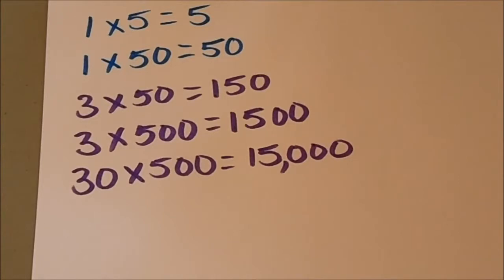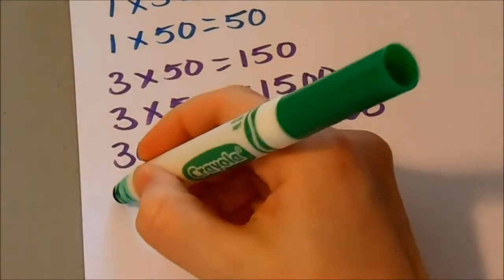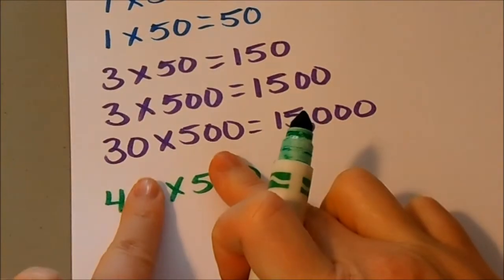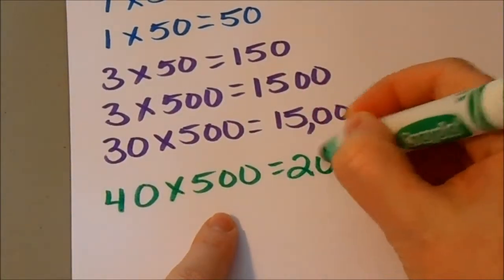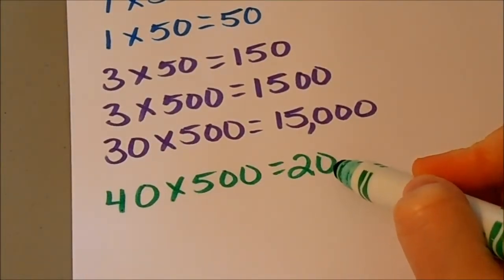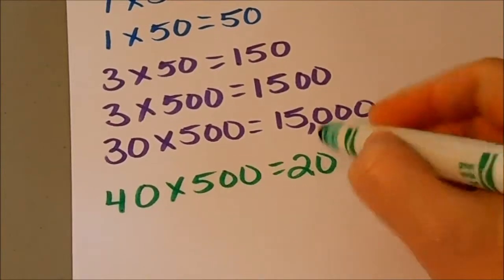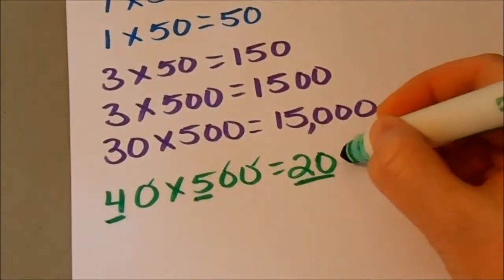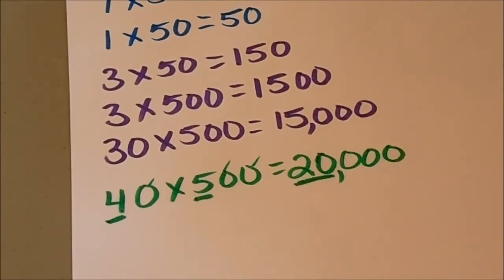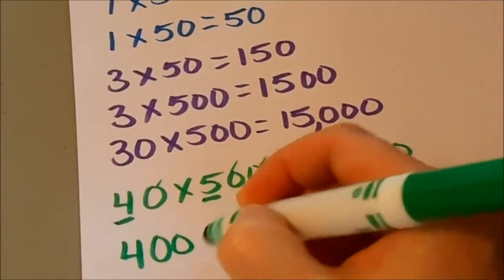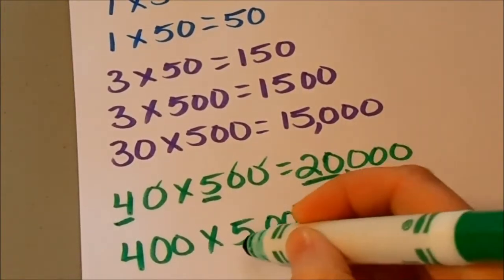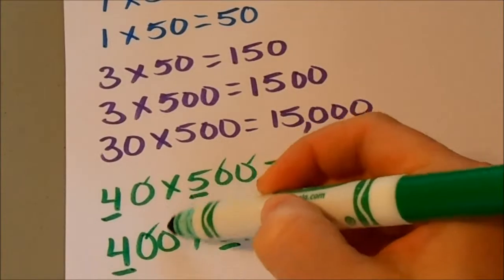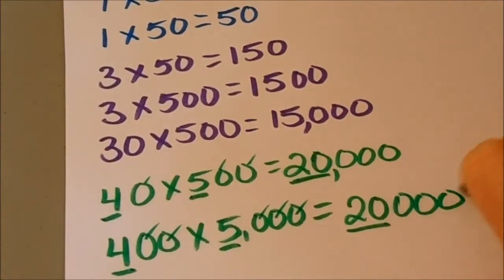Don't get confused by products that have a zero at the end. For example, 40 times 500 — using my little trick, I do 4 times 5, which equals 20. A lot of times this zero in 20 will get students a little bit confused. But this is still your main product for 4 times 5, and then you still have 3 zeros to add on to the end. We can do this with much larger numbers too — it's still 4 times 5 is 20 as the base, and then I count and add 5 zeros at the end.